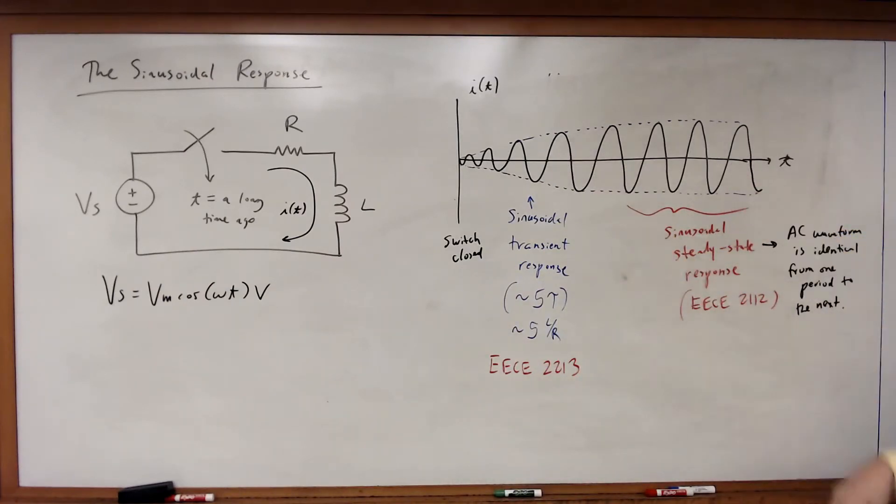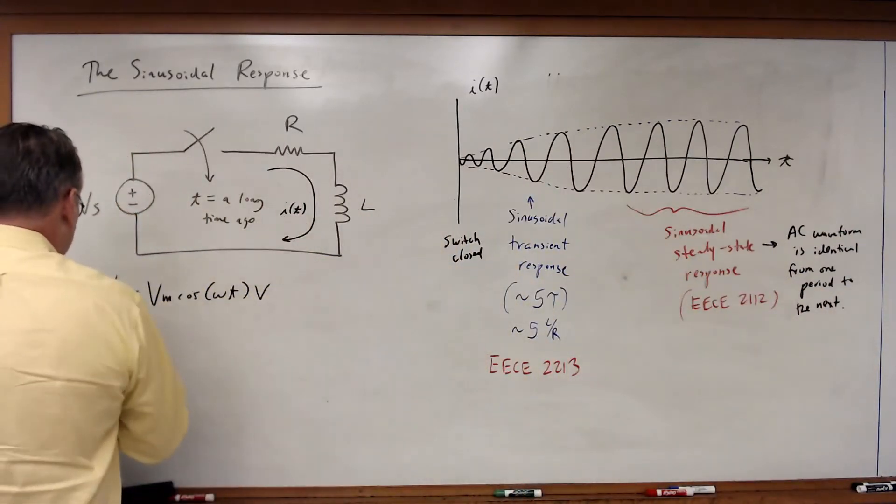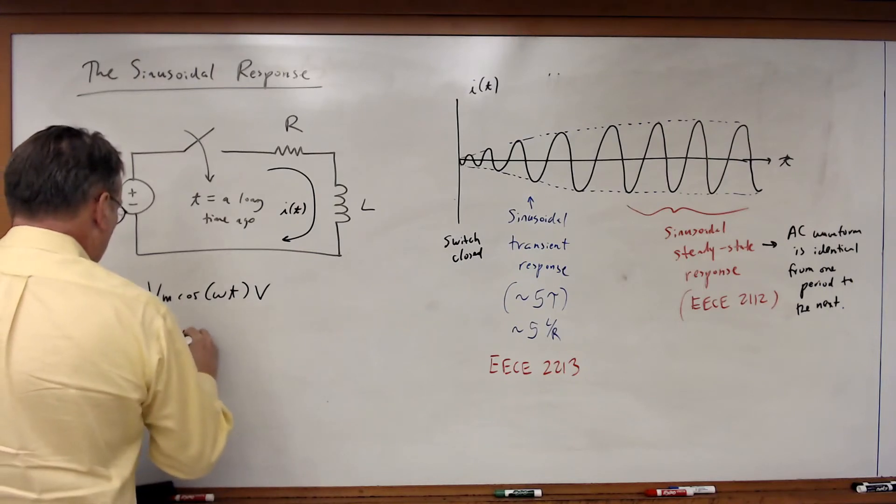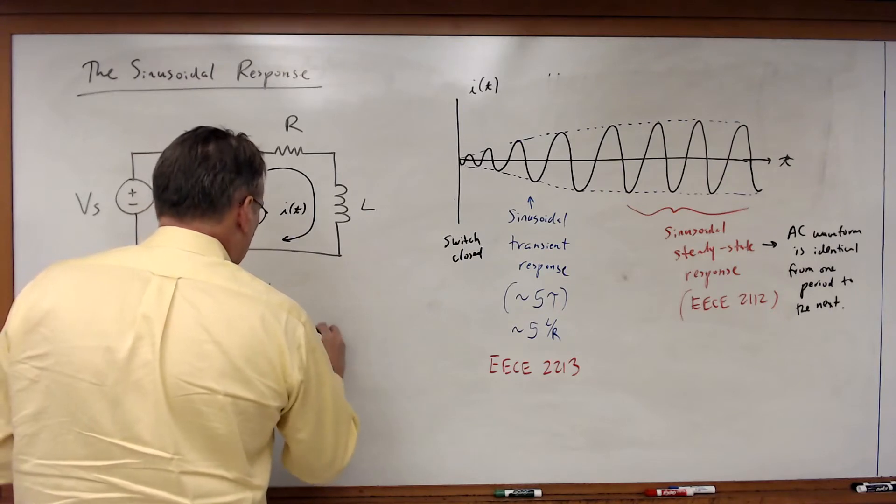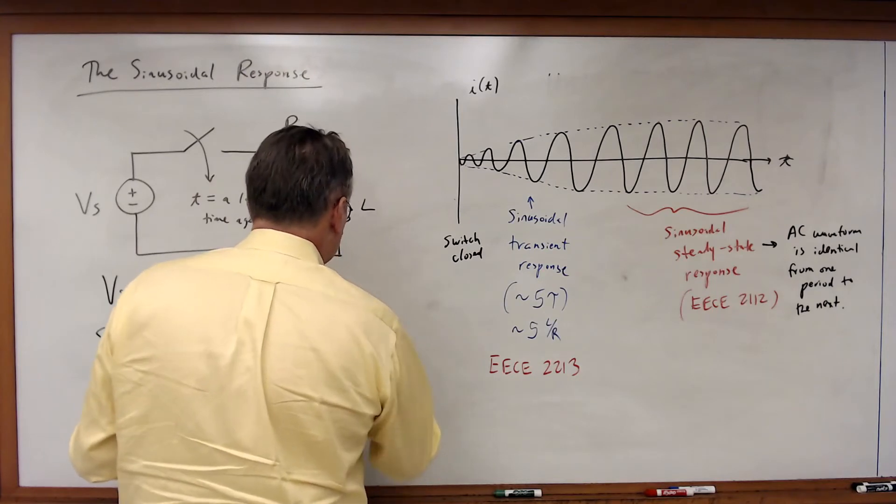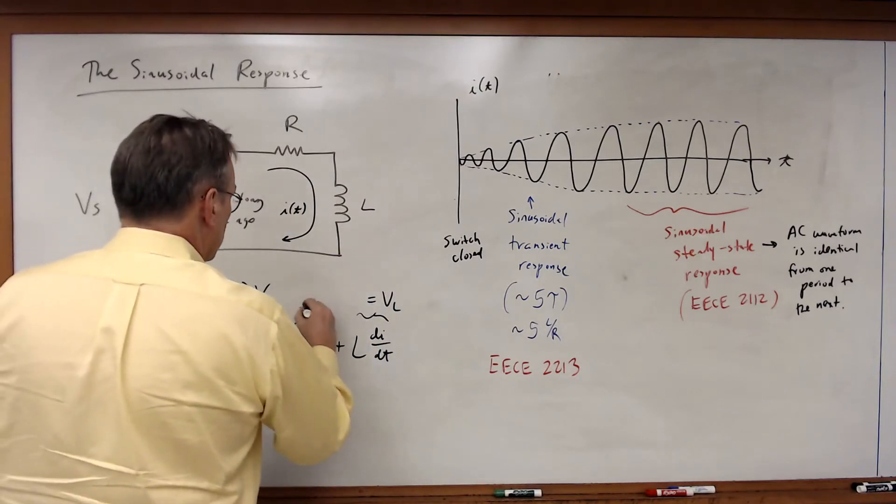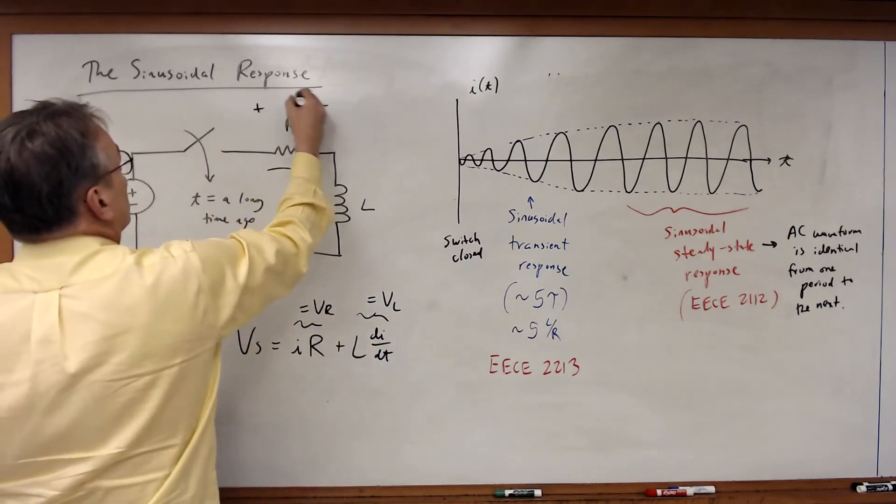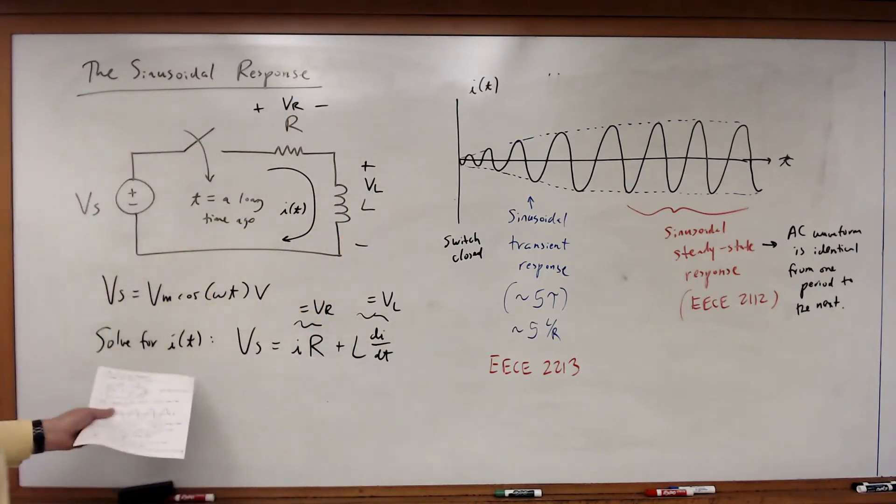Alright, so how would we calculate I of T? If we were to solve for I of T, we would write that Vs is equal to I times R plus L di dt, which of course is just equal to Vl. So this is equal to Vr, where this is the voltage across the resistor, and this is the voltage across the inductor. So we've actually looked at something similar to this before when we were looking at first order RL circuits. Only now Vs is a sinusoid.